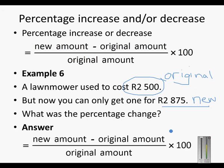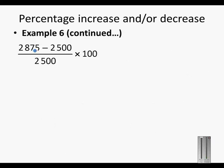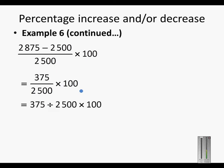So the percentage change. Formula: new amount minus original amount, divided by original amount. The new amount is 2875, the original amount is 2500, and we divide by 2500. 2875 minus 2500 is 375. So we take the 375 and divide it by the original amount which was 2500, and we times by 100.